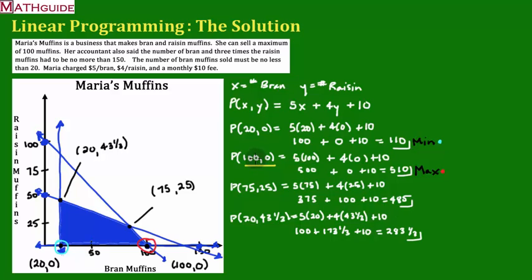it says that Maria has to sell 100 bran muffins and zero raisin muffins. So it looks like her business, if she's going to mathematically maximize profit, would be to solely sell bran muffins, and that's what she would do to maximize her profit.